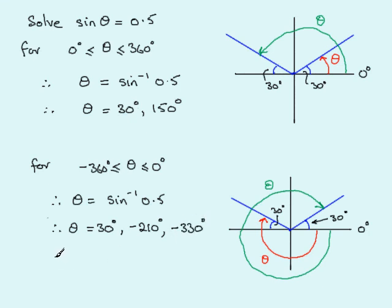So, in all, what we have is that at the end of the day, because we only need angles between minus 360 degrees and zero, the only ones that we need are the minus 210 degrees and the minus 330 degrees.